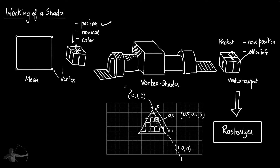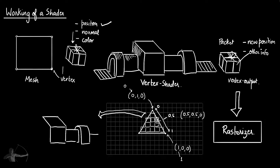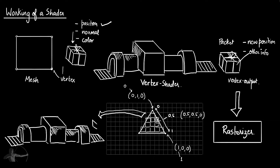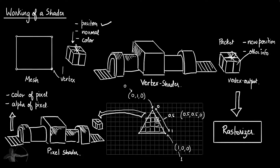Based on the pixels identified by the Rasterizer, the fragment shader or pixel shader will be executed for those pixels. For each pixel identified within a geometric region, a pixel shader will be executed. This packet of interpolated information will be given to the fragment shader, and the pixel shader will process this information based on our instructions. After processing, the pixel shader will output the color of the pixel and the alpha of the pixel, which will help to eventually draw the pixel on the screen.